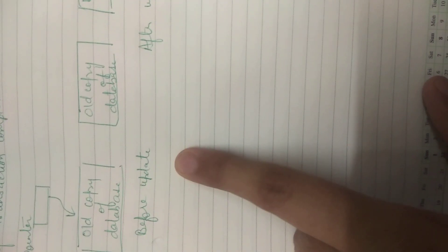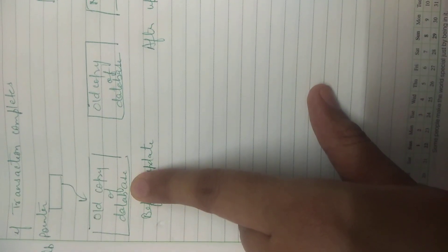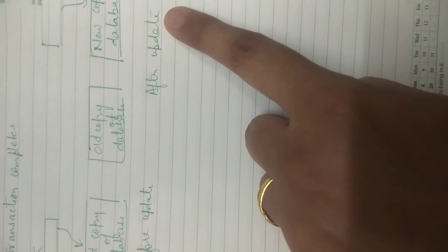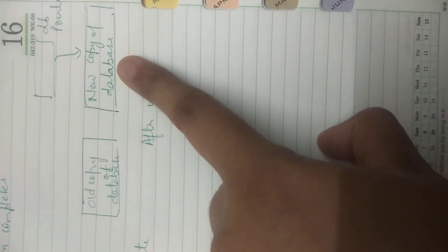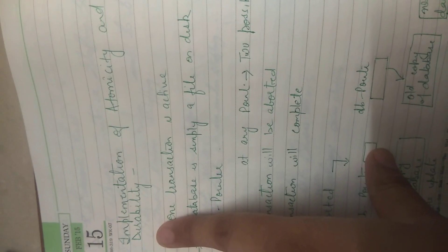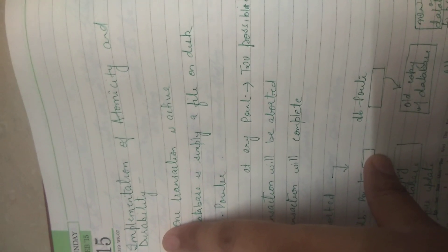As we can see in this example, before the update the db pointer points toward the old copy of the database, and after the update the db pointer points toward the new copy of the database, and the old copy of the database is deleted. In this way, we implement the atomicity and durability of a transaction. Thank you so much.